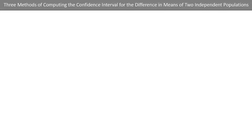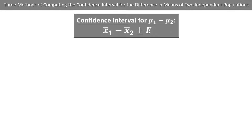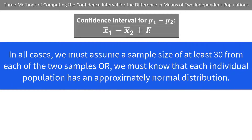There are three different methods of computing the confidence interval for the difference in means of two independent populations. In any of the three cases, the confidence interval is equal to x-bar1 minus x-bar2, plus or minus the margin of error. The only thing that changes is the formula for the margin of error. In all cases, we must assume a sample size of at least 30 from each of the two samples, or we must know that each individual population has an approximately normal distribution.